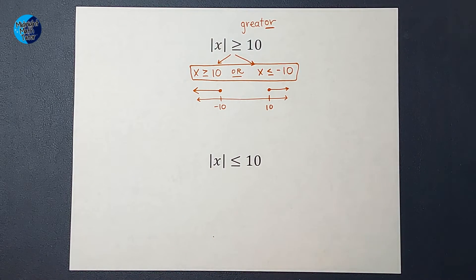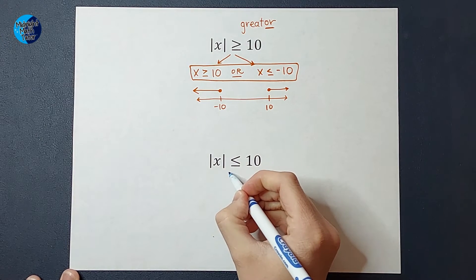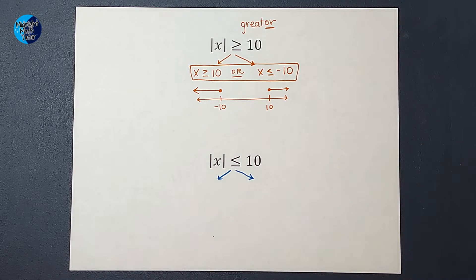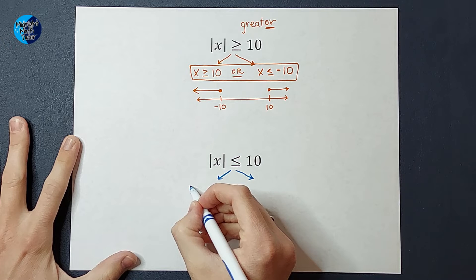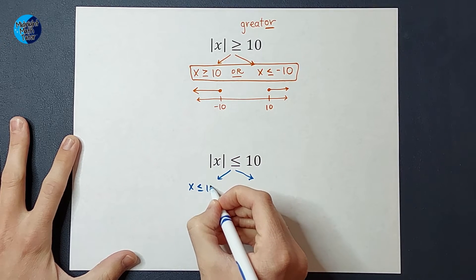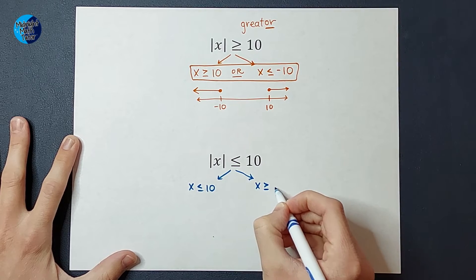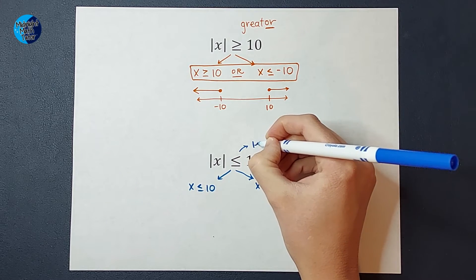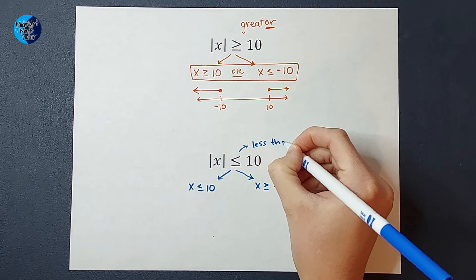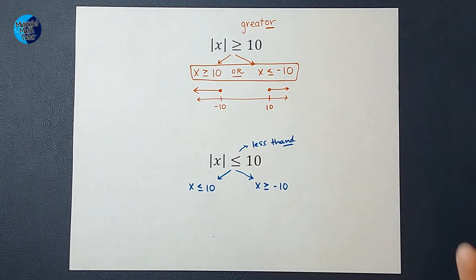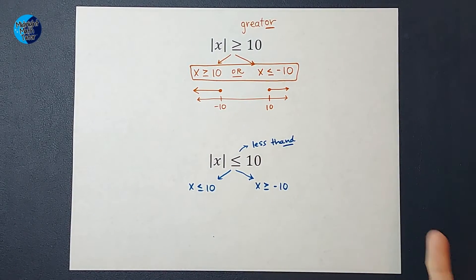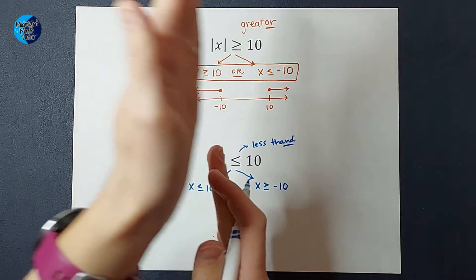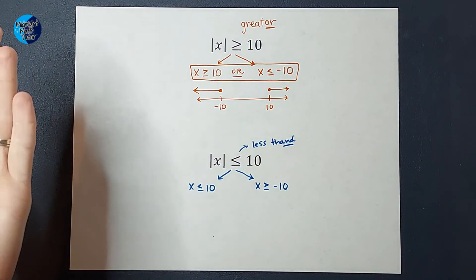But what about when we have less than? We split it into two again. So if I were to just do this, maybe how I've been told without necessarily knowing why it works, I would split it into two. X is less than or equal to 10 and X is greater than or equal to negative 10. And then I noticed that this is a less than, which can kind of sound like less than. Maybe you've been told that, which means it's going to be an and inequality, which just as a side note, the greater and less than work when the absolute value is on the left side.